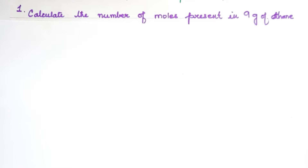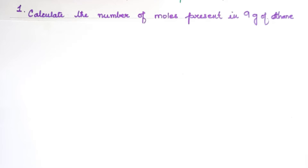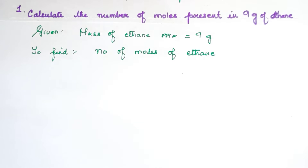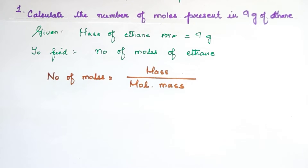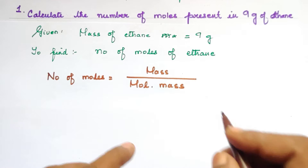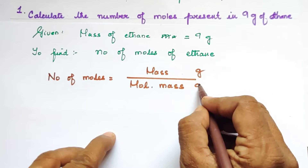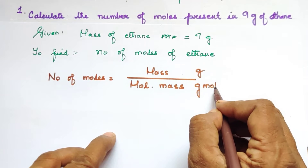What is given in the question? 9g of Ethane. What is asked? Calculate the number of moles of Ethane. The number of moles formula is: Number of moles = mass divided by molecular mass (or molar mass). Mass is given in grams, and molar mass is given in grams per mole.